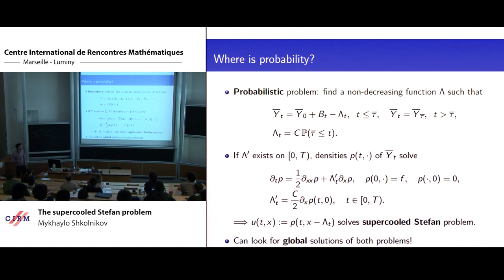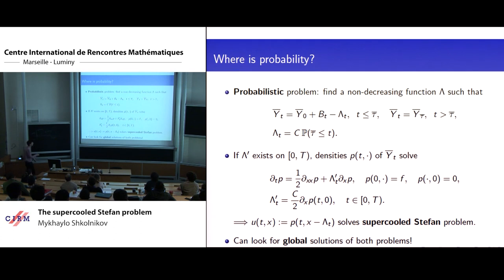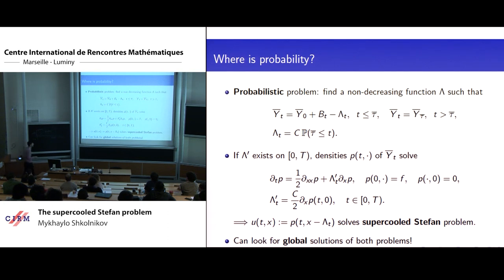Therefore, you may be able to extend your solution beyond the blow-up time. We can introduce a notion of global solutions to the supercooled Stefan problem by saying we are looking for capital Lambdas solving this probabilistic problem. Once we have solved this problem, we make this change of variables. This is what we will call a global solution of the supercooled Stefan problem. You may ask if this is a physical solution — the answer is yes, but you have to impose an additional condition, which I'll come to a little later. In short, the solutions we construct will have physical meaning.